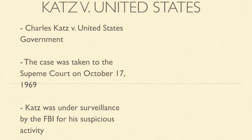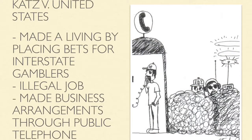The Supreme Court case Katz v. the United States was between Charles Katz and the United States government. The case was taken to the Supreme Court and argued on October 17, 1967, and was decided on December 18, 1967. The case originated when Katz was under surveillance by the FBI for suspicious activity. Katz made a living by placing bets for interstate gamblers and then keeping a share of the winnings. Since it was illegal to do this under federal law, he would make business arrangements through public telephone booths along Sunset Boulevard. They had planned to bug three of the booths he had used regularly to catch him on tape, placing one of his bets.